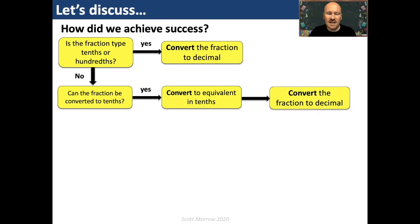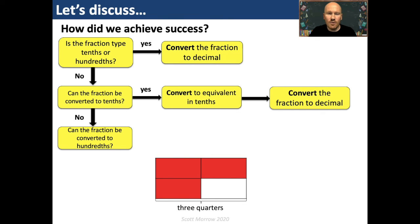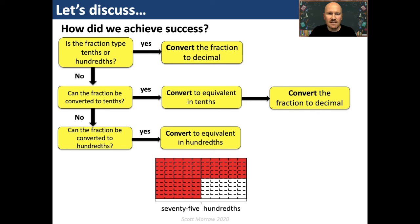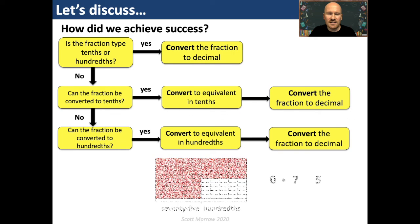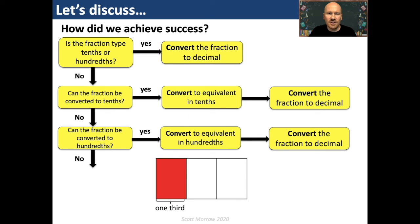But what if the fraction can't be converted into tenths? We ask: can the fraction be converted into hundredths? For example, three quarters can be converted: three quarters is the same as seventy-five hundredths, so we write 0.75. But what if it can't be converted into hundredths either? For example, one third — thirds can't be converted into tenths or hundredths. What do we do in this case? We're going to explore this in a future lesson.